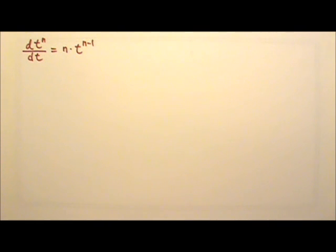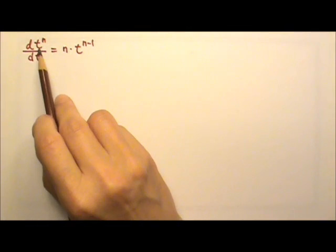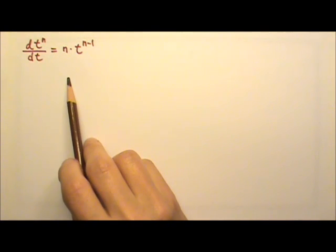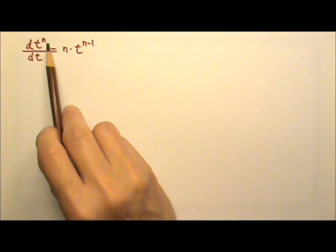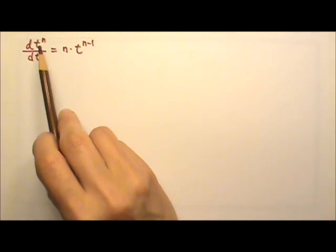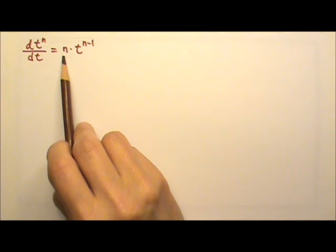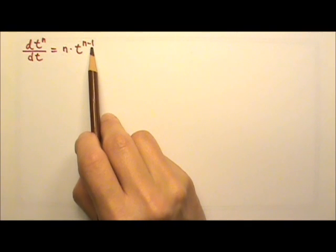In this lesson, we will work on taking the derivative of a polynomial. Here's the equation we will use when we take the derivative of t to the nth degree. I'm not going to derive this equation — hopefully your math teacher does it in your math class. When we take the derivative of t to the nth degree with respect to t, all we have to do is bring down the exponent n as a coefficient, and then we lose one degree of power.